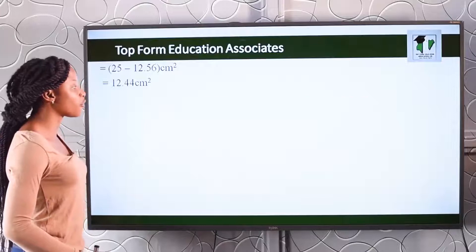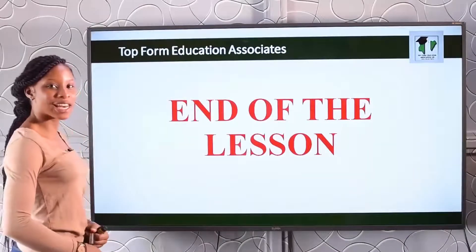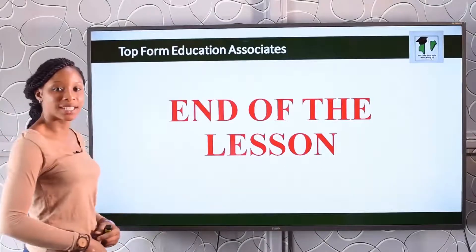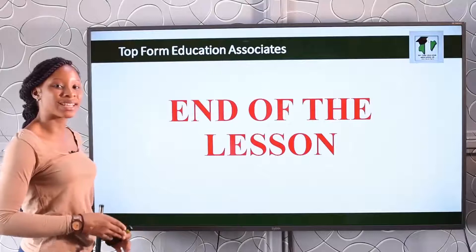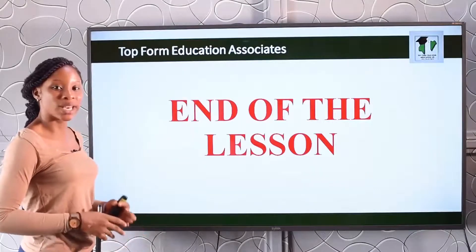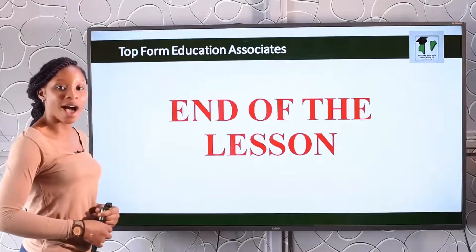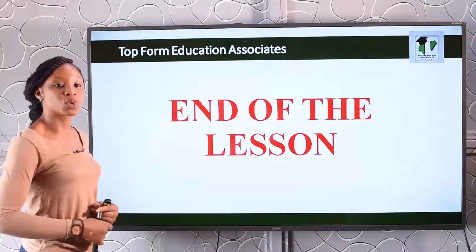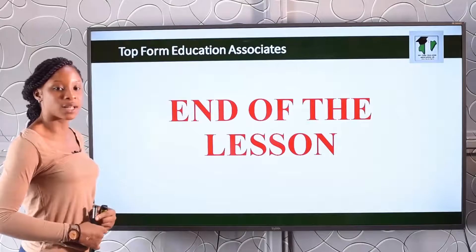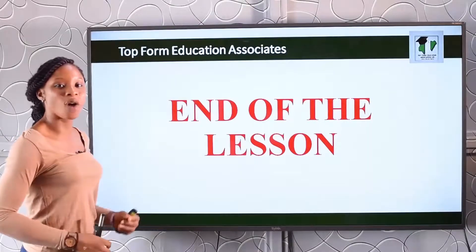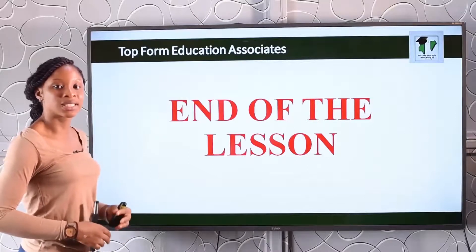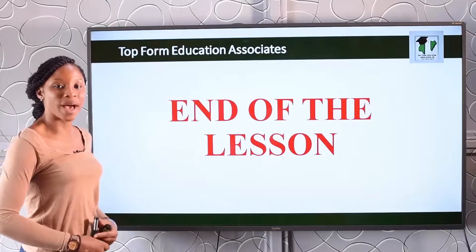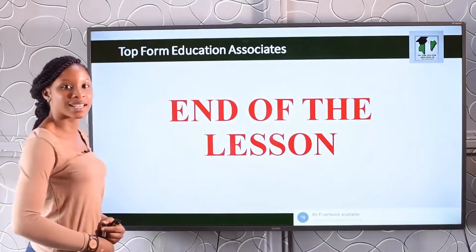We've come to the end of the lesson. Today we learned a lot about area. The area of a triangle is half base times height. The area of a parallelogram is base times height. The area of a trapezium is half H, open bracket, A plus B. The area of a square is length squared. The area of a circle is πr². The area of a semicircle is half πr². The area of a rectangle is length times breadth. Please go back and revise what we've studied today. See you in the next class — thank you.